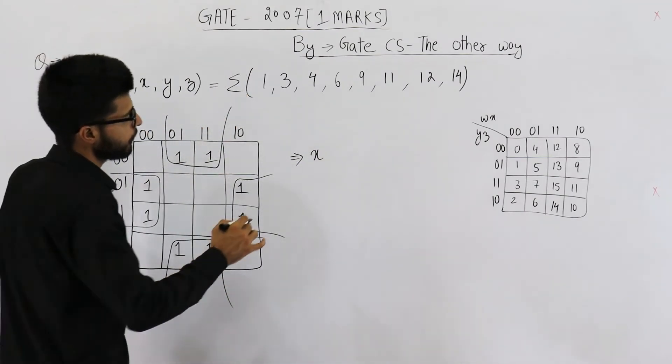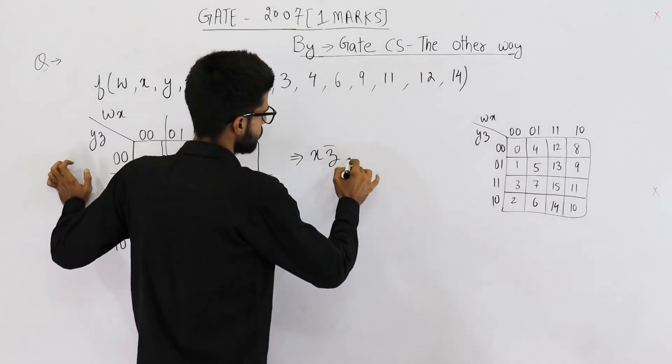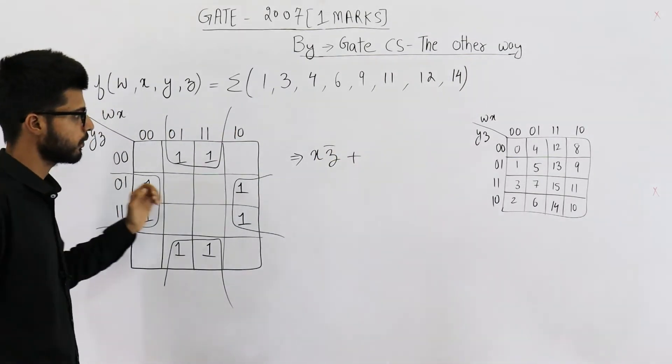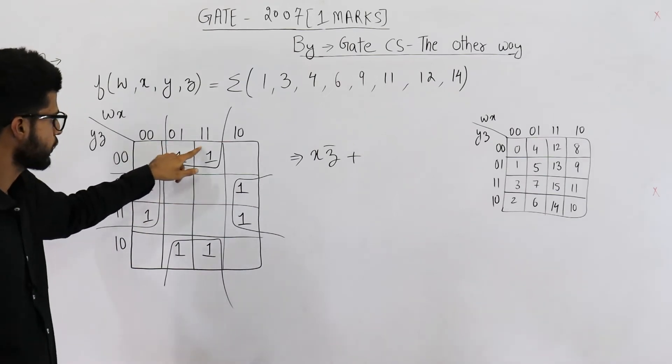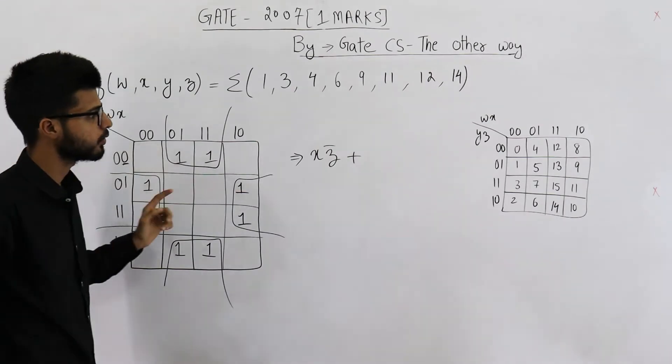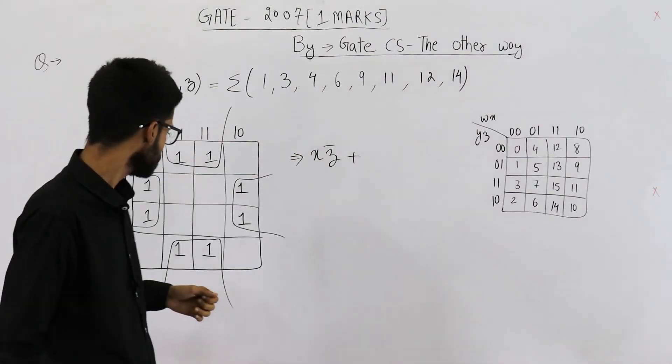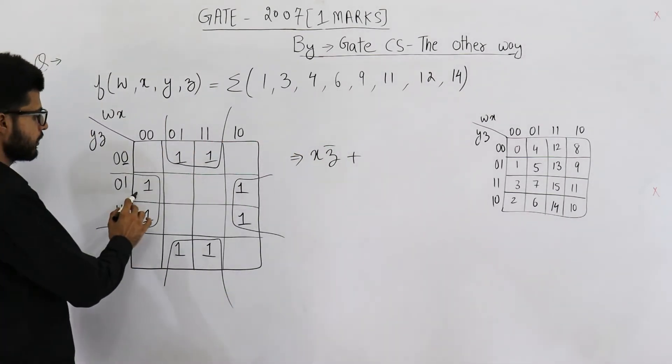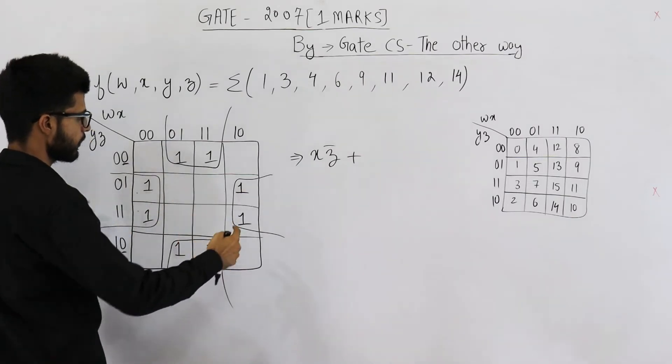So first Z bar plus... how did we get Z bar? See, for all of these four cells, value of variable Z is zero. Zero means bar. So now let's consider these four cells.